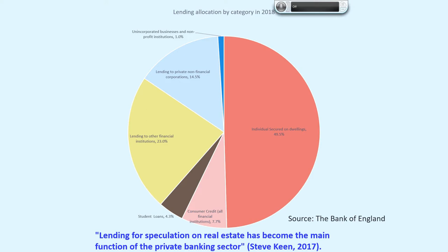A corporation is a business that has been given a separate legal identity. It will have a memorandum of association and articles of association, and can conduct contracts in its own name. Examples are private limited companies with the 'Limited' suffix, and public limited companies with 'PLC' after their name. They are in the private sector and are non-financial, so lending to private non-financial corporations is approximately 14.5%.